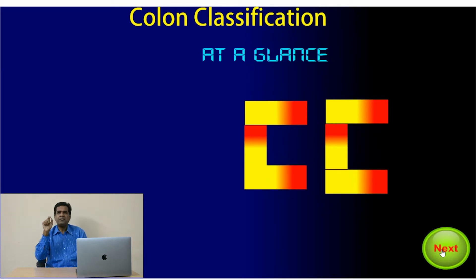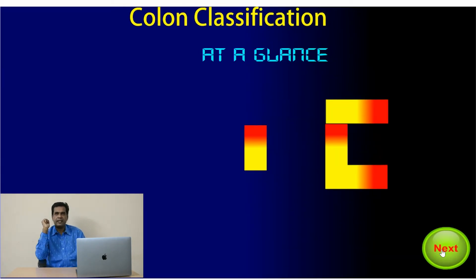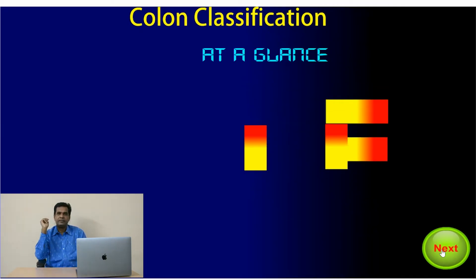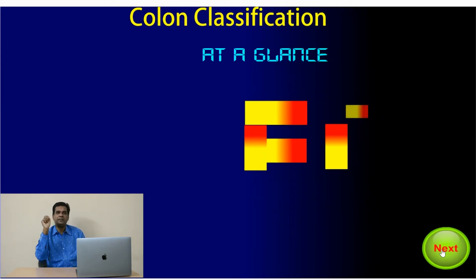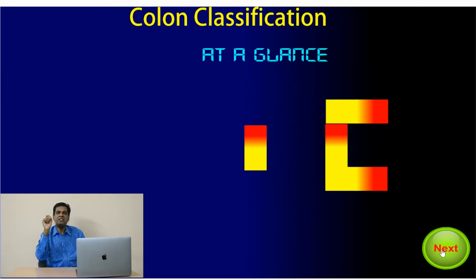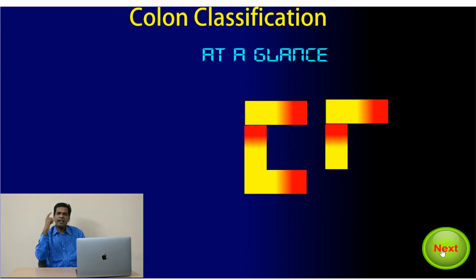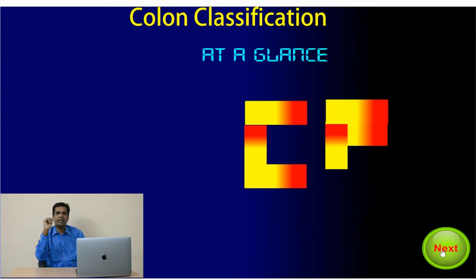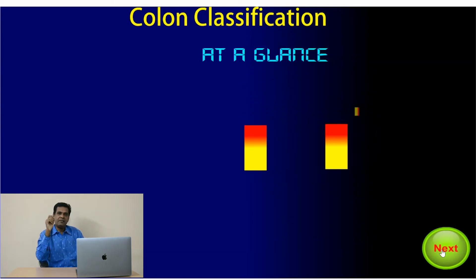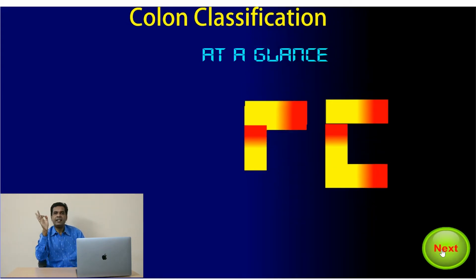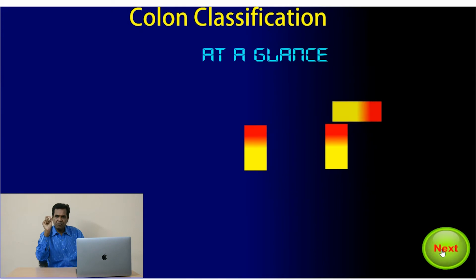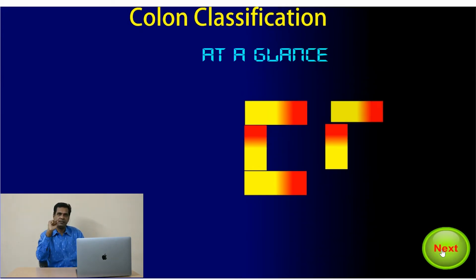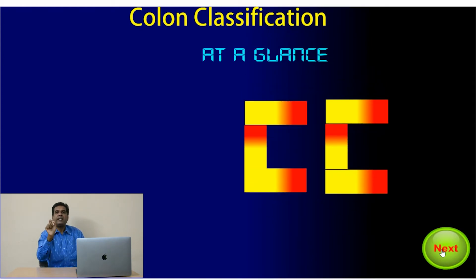Another feature of Colon Classification Scheme is hospitality. Hospitality allows the classifier to identify notations for any facets — you can connect any facets using the right connecting digits. The devices and isolates provided in the Colon Classification help classifiers to maintain hospitality.